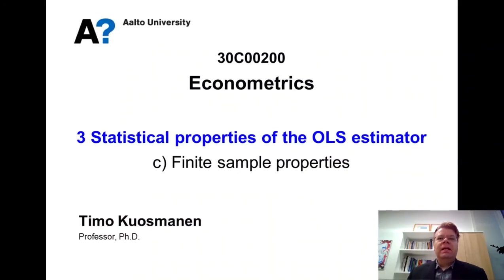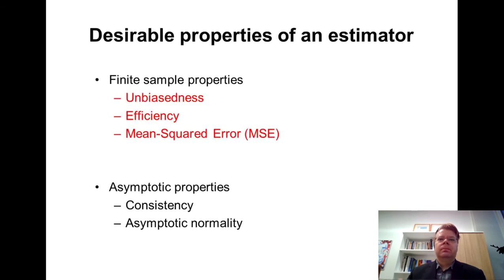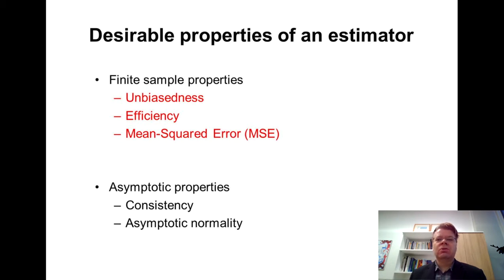We are now ready to look into more detail at the statistical properties of the ordinary least squares estimator. We'll start from the finite sample properties — those that apply irrespective of the sample size. I will consider unbiasedness, but also efficiency and mean squared error, or MSE. These are all relevant concepts to know.